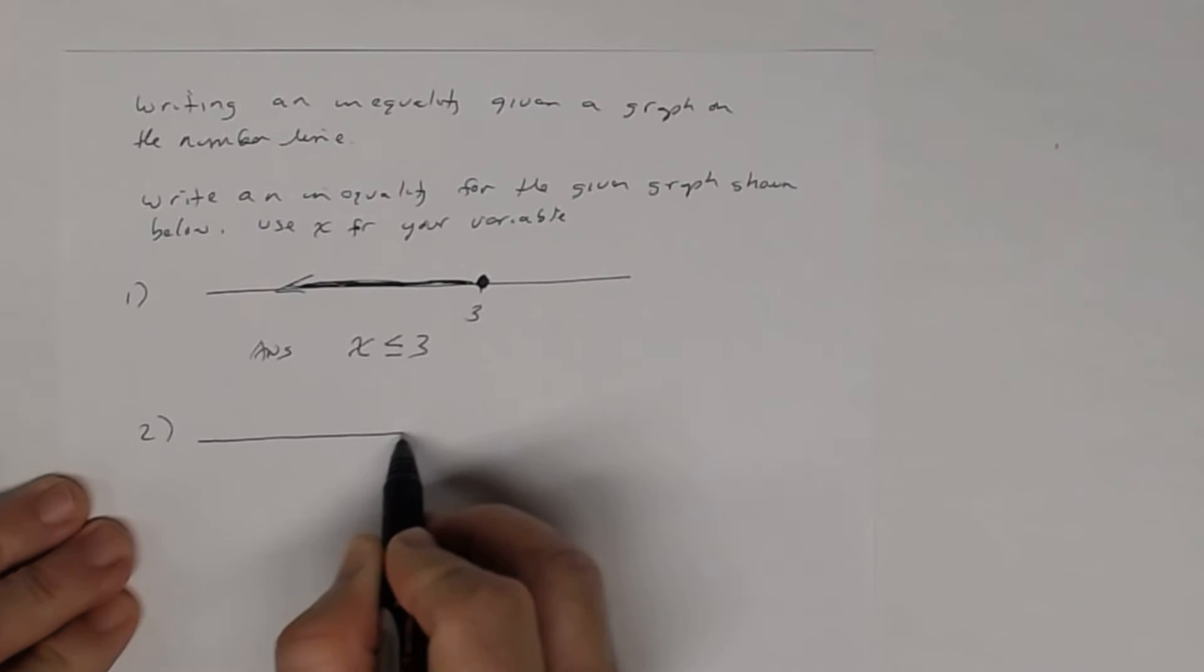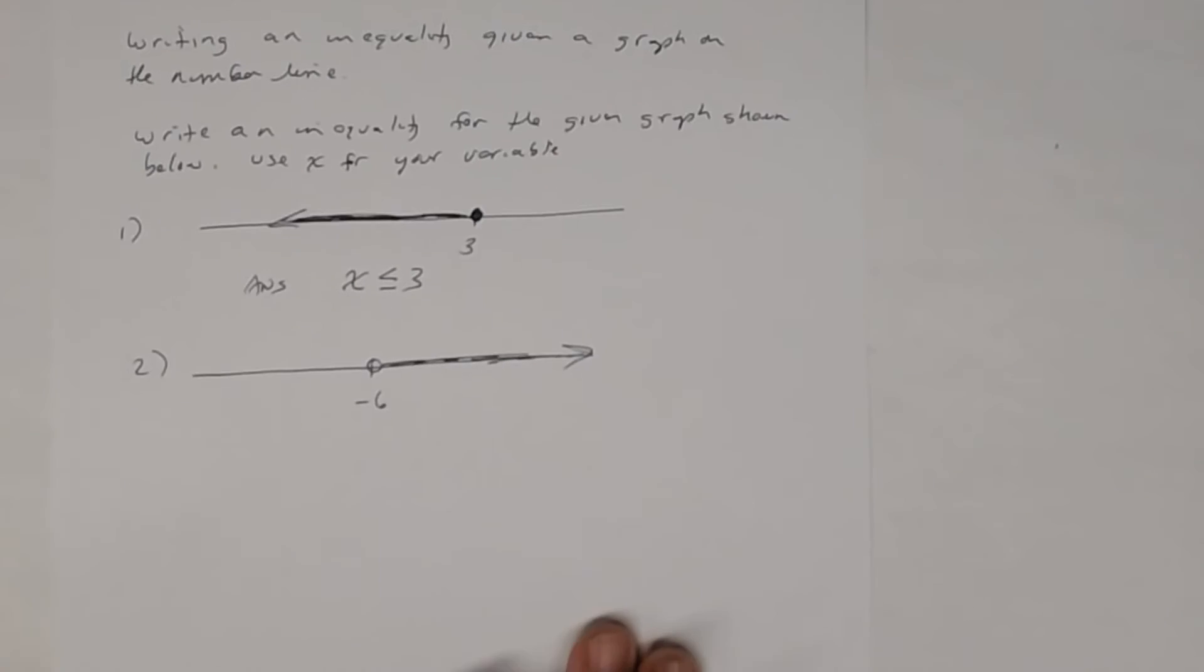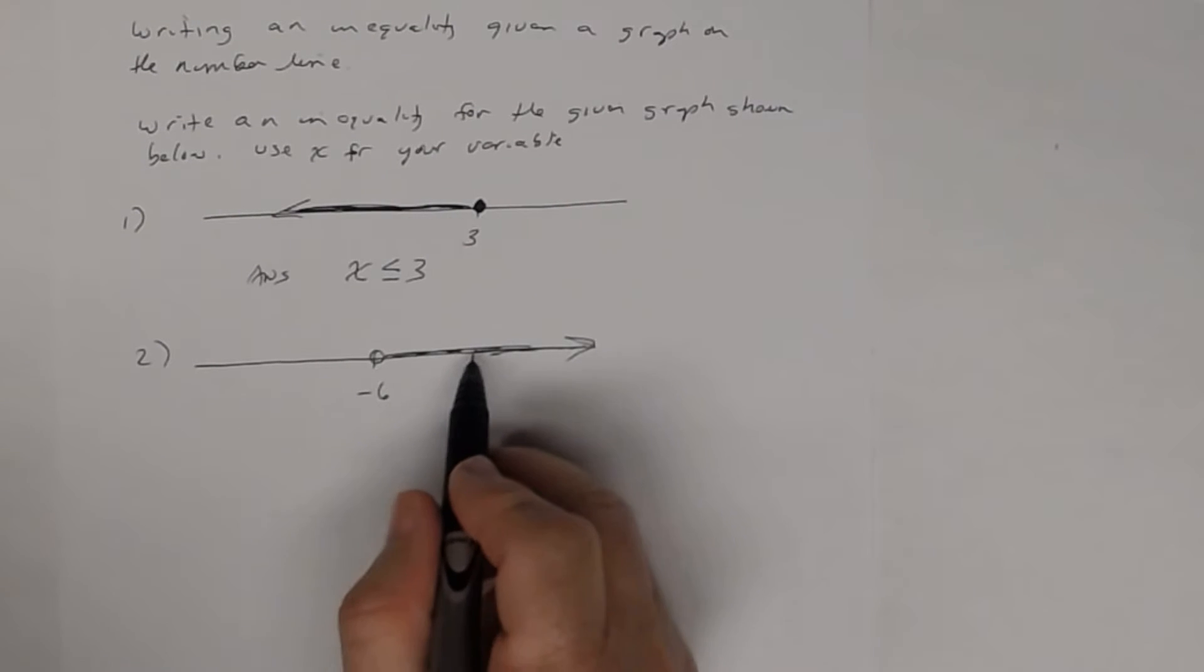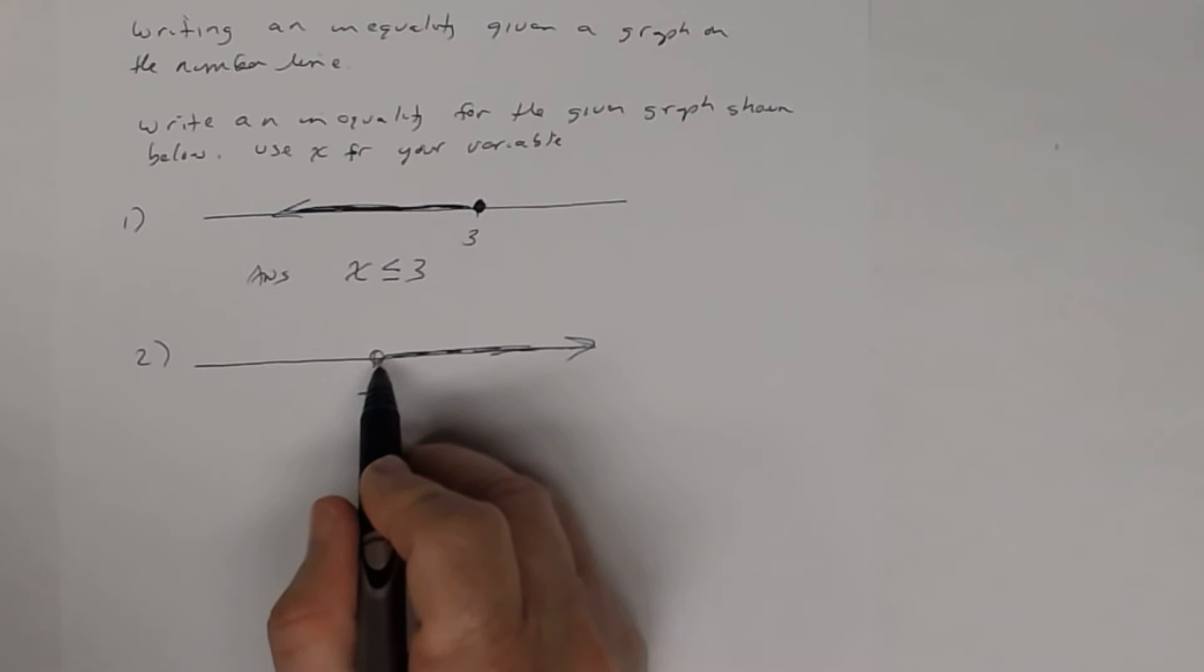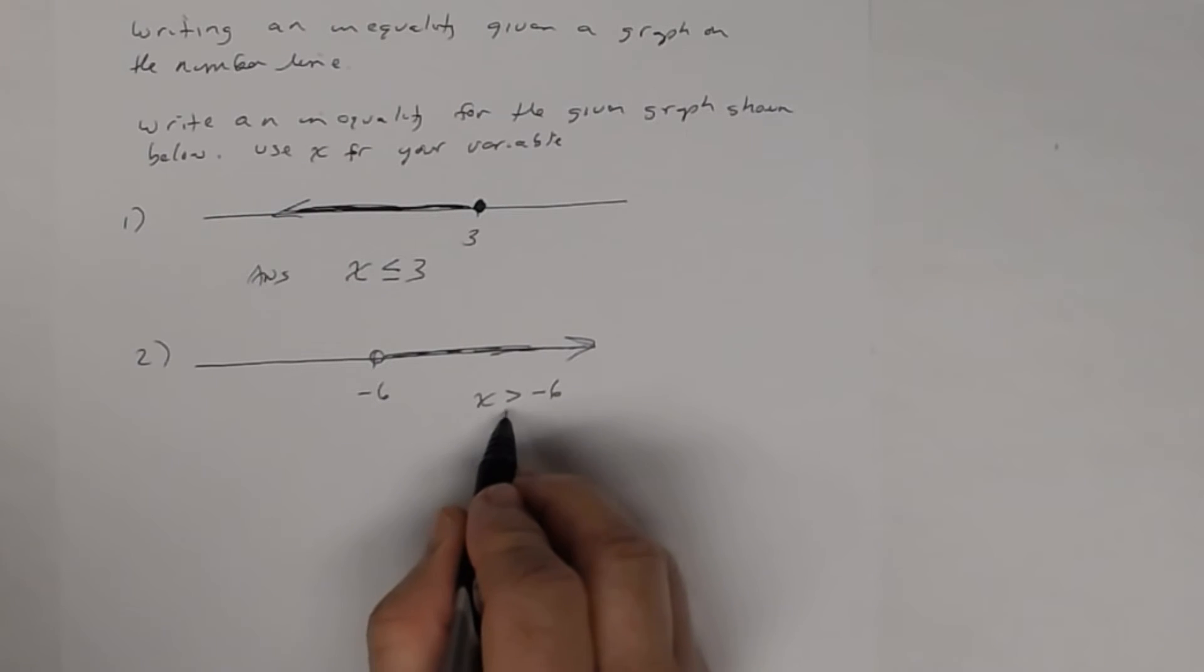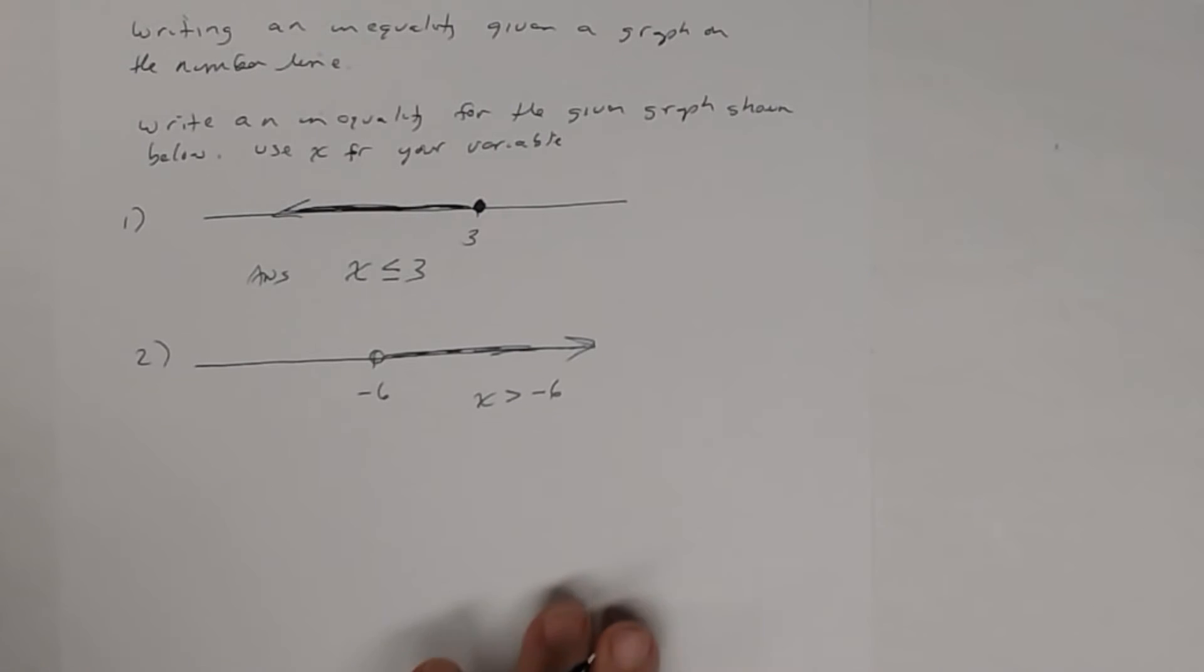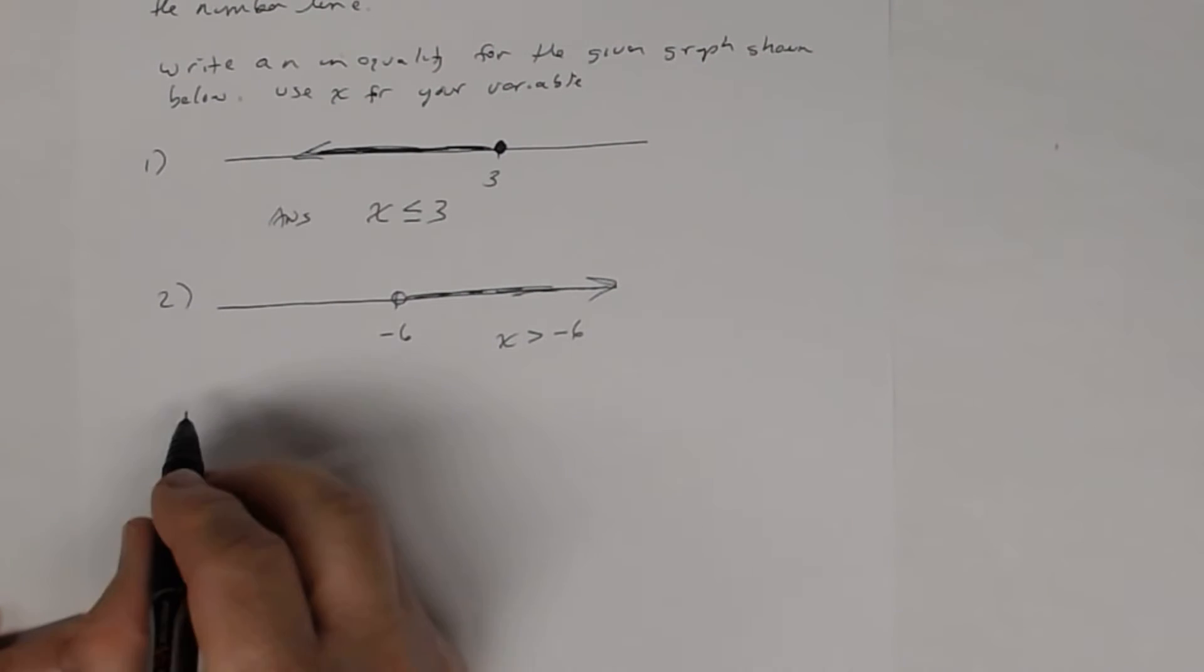If you had something like this, let's say negative 6 with an open circle going this way. What's being shaded is every real number greater than negative 6. Notice that open circle. Open circle means that negative 6 is not included, so you're going to write it as x is greater than negative 6. No equal sign because there's no closed circle. Very simple process, not difficult at all.